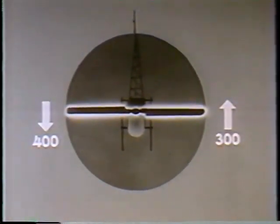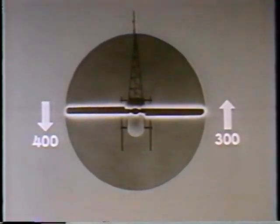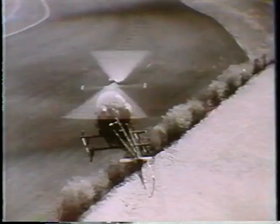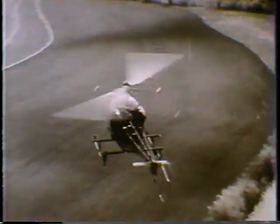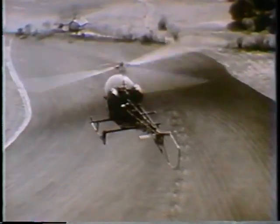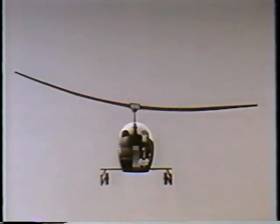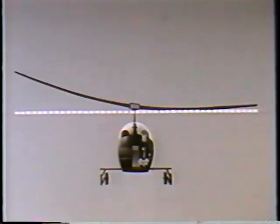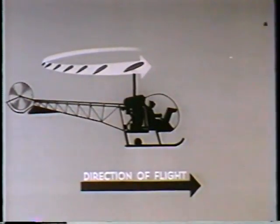And this dissymmetry of lift, if nothing were done to counteract it, would soon result in the helicopter turning over on its back. In order to prevent this from happening, some means must be employed which will permit the advancing blade and the retreating blade to produce equal amounts of lift. In most modern helicopters, this is accomplished by flapping. The advancing blade is allowed to flap up, while the retreating blade is allowed to flap down without changing pitch angle. If the advancing blade were not allowed to flap up, it would follow this path, and the relative wind would be from this direction.